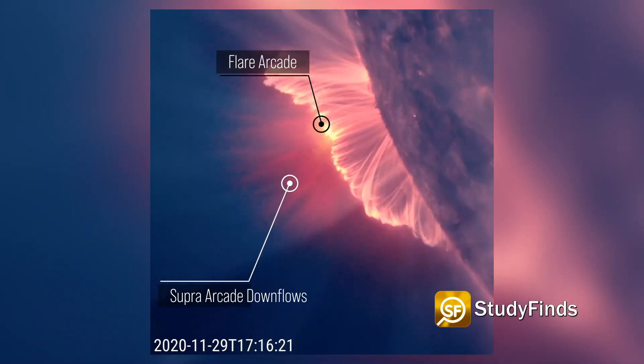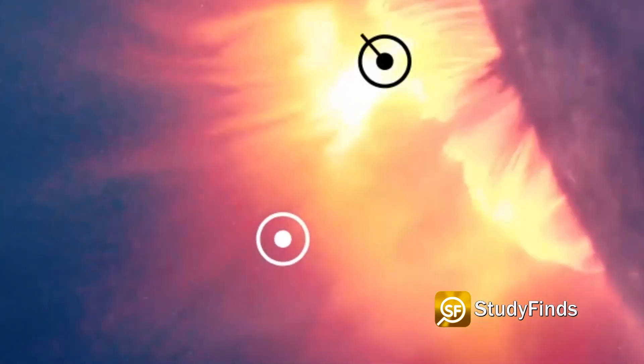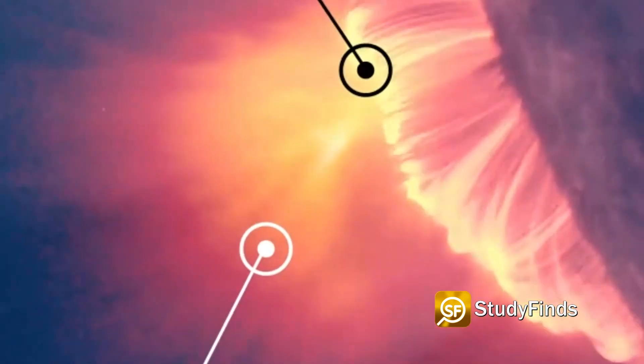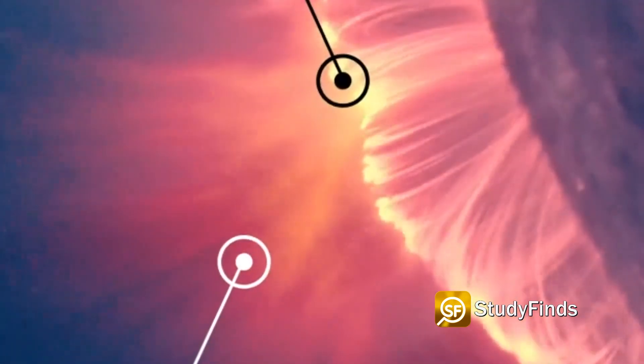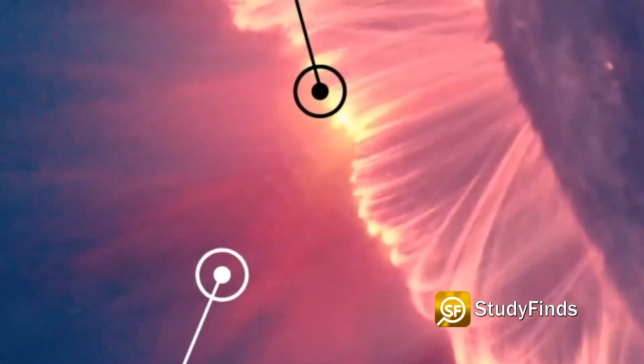The strange motion of these particular flares, dubbed downward-moving dark voids, has kept the scientific community guessing until now. Researchers say that magnetic fields that interact with each other on the sun are pointing in all different directions.